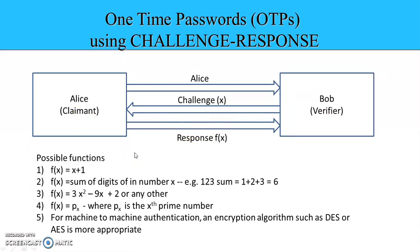These are some examples of possible functions which the user and Bob, the authenticator or verifier, can have pre-decided. For example, f(x) = x + 1, or f(x) = sum of digits in number x. For example, if the number x is 123, then f(x) will be 1 + 2 + 3 = 6. Or f(x) can be any other function like 3x² − 9x + 2, or f(x) = p(x), where p(x) is the x-th prime number.